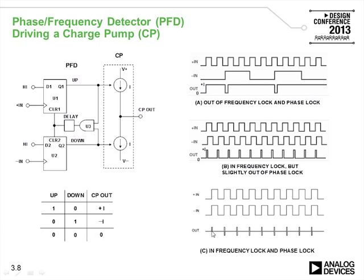Older PLLs suffered from the dead zone problem where the loop would lose effective charge pump output and drift away. This is prevented by the feedback and delay element, called the anti-backlash pulse width, which is programmable. That delay determines the width of the small pulses in diagram C. The PFD and charge pump are at the heart of the phase locked loop and determine, for example, the phase noise quality of the PLL output — any noise here will exhibit itself in the overall noise of the PLL.